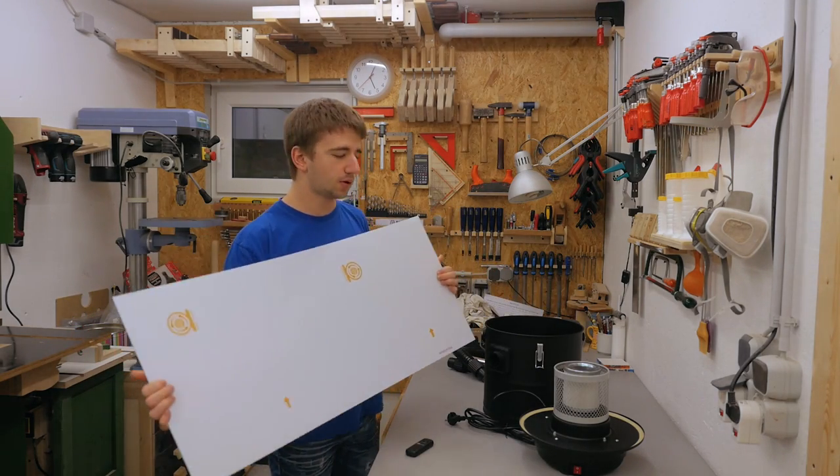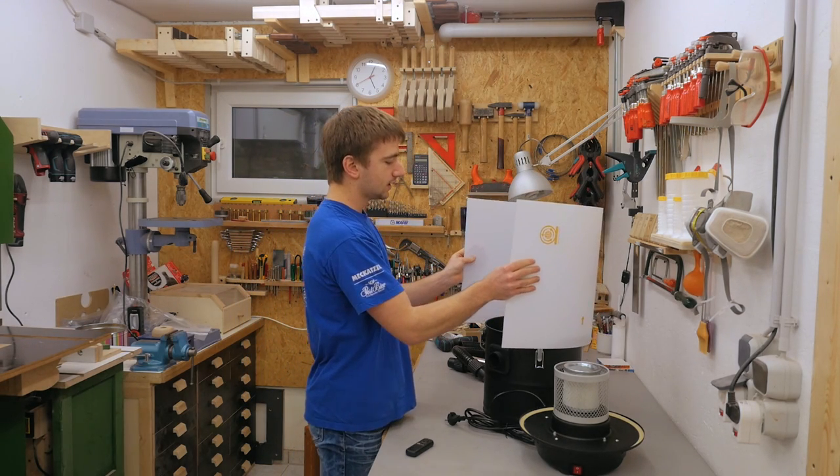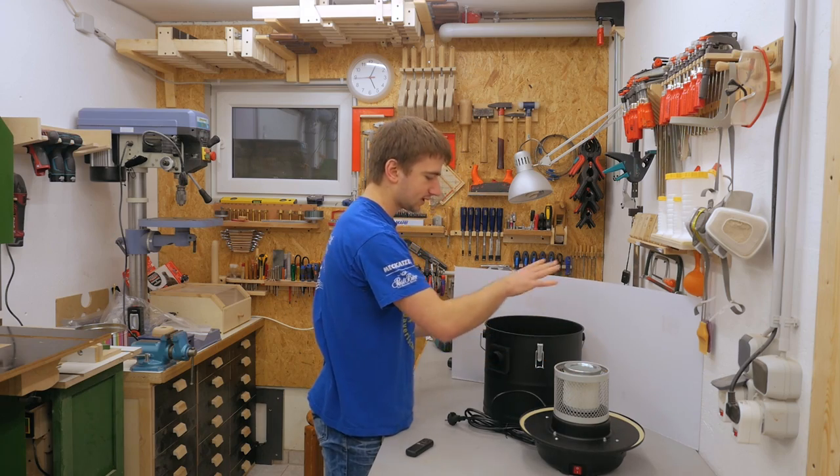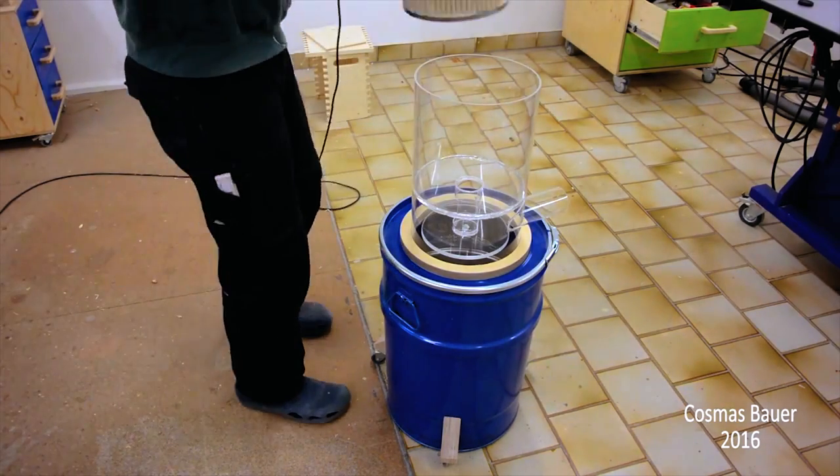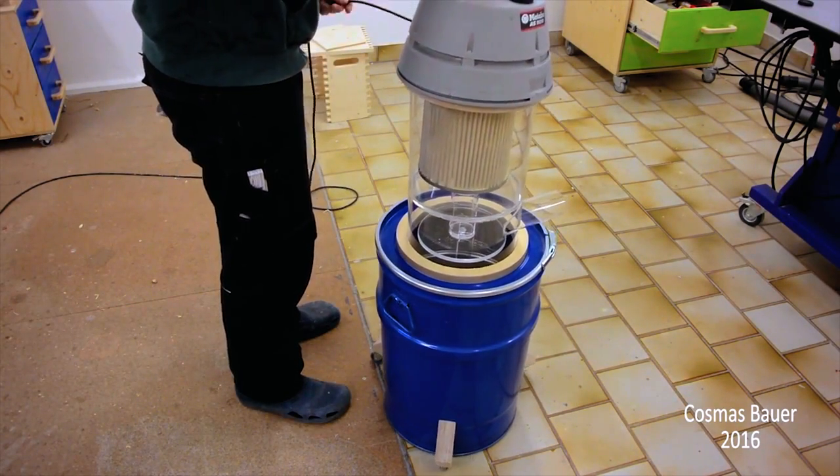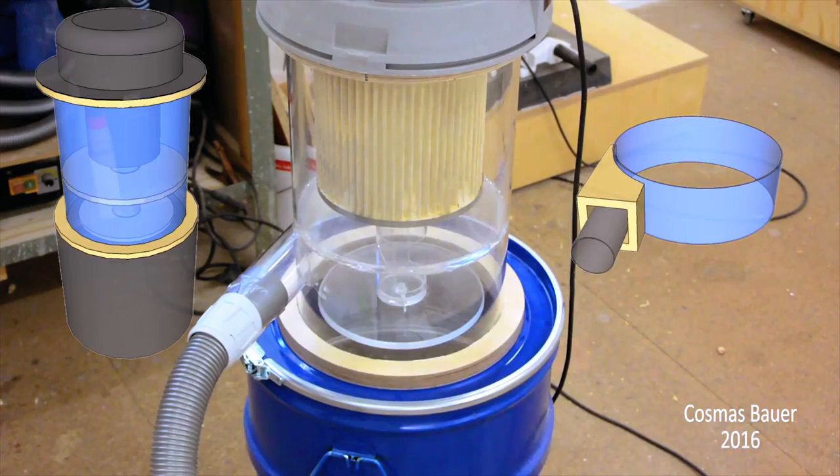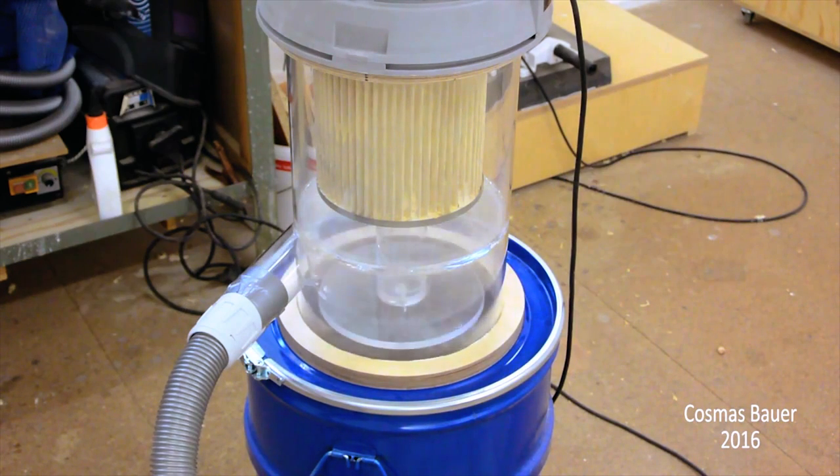I also picked up a little sheet of two millimeter polycarbonate with which I want to build a cyclone separator to go between the motor unit and the bucket. I picked this idea up from a video by Cosmos which I've linked to in the video description. I used his idea and designed something to fit around the vacuum I bought.